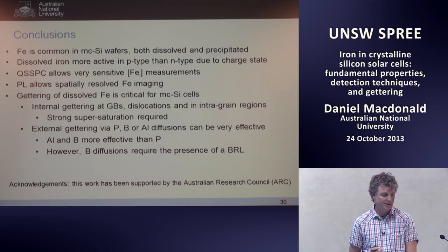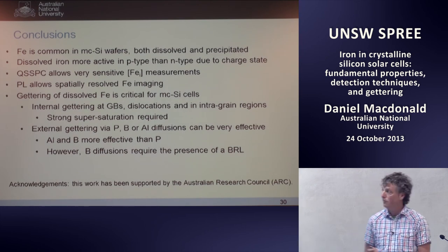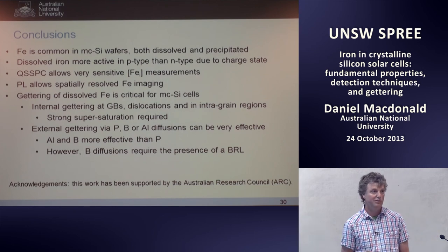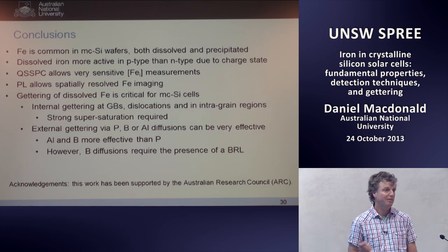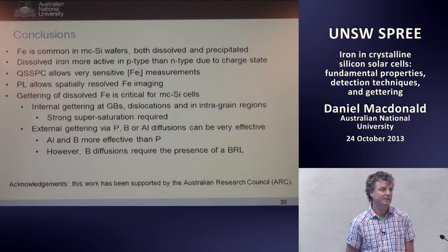In conclusion: iron is a common impurity in multicrystalline wafers, present in dissolved and precipitated form. The dissolved iron is more recombination-active in p-type than n-type due to different charge states. We can measure dissolved iron concentration with QSSPC and PL imaging. External gettering by phosphorus diffusion is the most important process for industrial multicrystalline cells. Aluminium and boron are in principle more effective at gettering than phosphorus, but boron gettering requires the boron-rich layer, which is incompatible with good surface passivation — and finding a way around that conundrum is ongoing work.